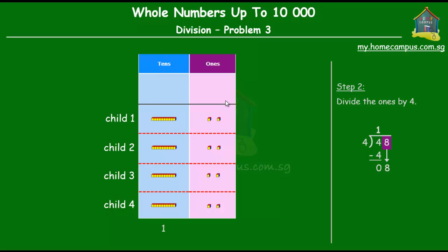If there are 4 children and 8 ones, each child gets 2 ones, right? So 8 ones divided by 4 gives us 2 ones.